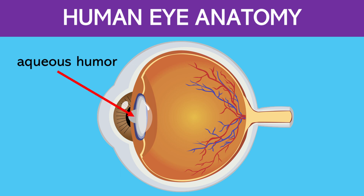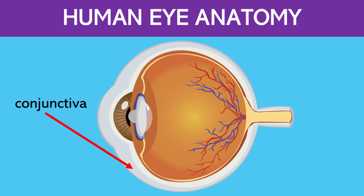This is the aqueous humor. This is a clear fluid that fills the space between the cornea and the lens. It provides nutrients to the eye and helps maintain intraocular pressure.